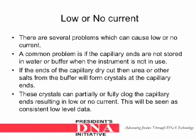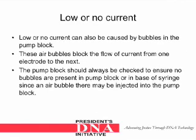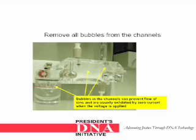This will be seen as consistent low-level data. Low or no current can also be caused by bubbles in the pump block, which block the flow of current from one electrode to the next. The pump block should always be checked to ensure no bubbles are present in the pump block or in the base of the syringe, since an air bubble there may be injected into the pump block. Depicted in this diagram are several areas where bubbles can be formed in the pump block. Bubbles in the channels can prevent flow of ions and are usually exhibited by zero current when the voltage is applied.